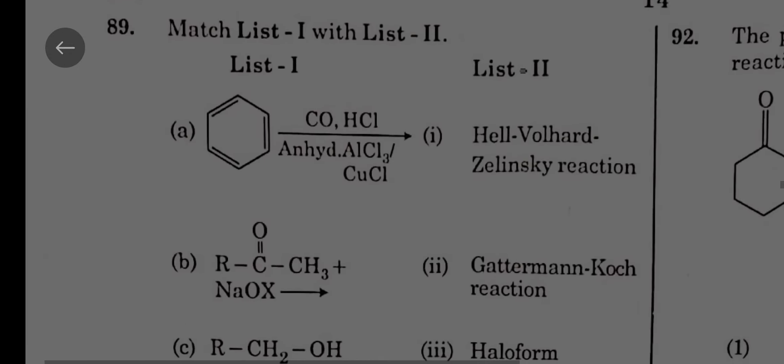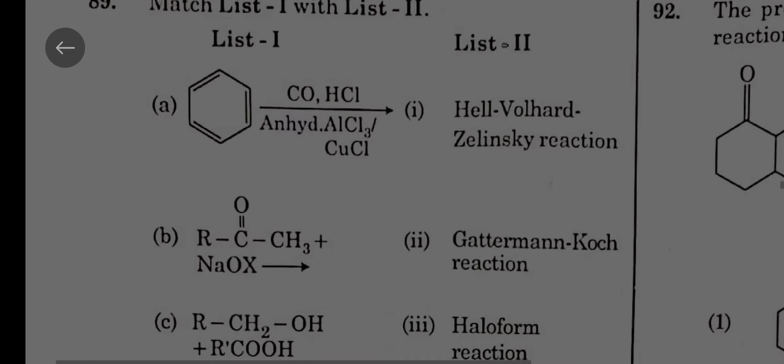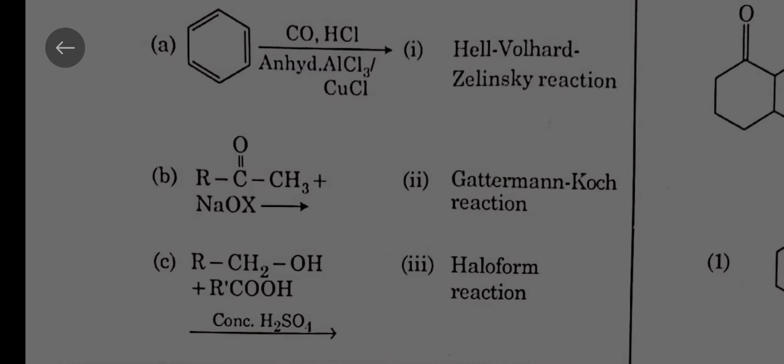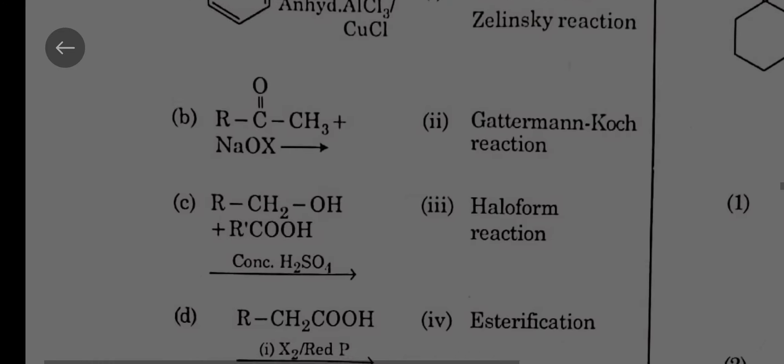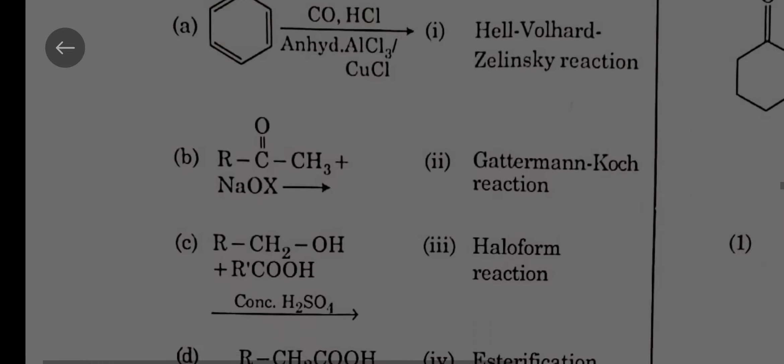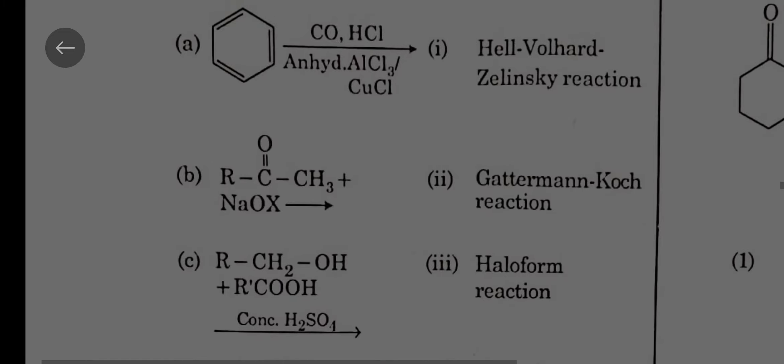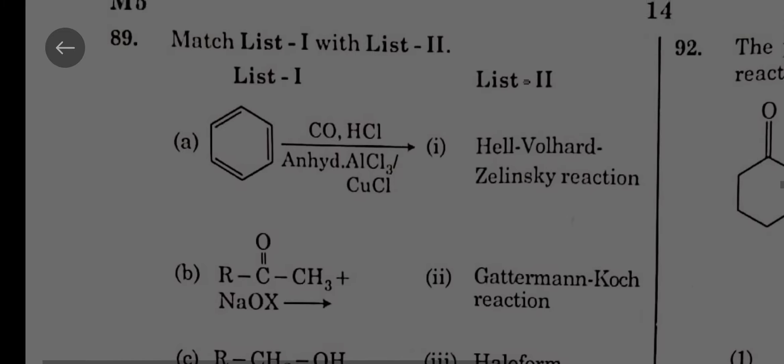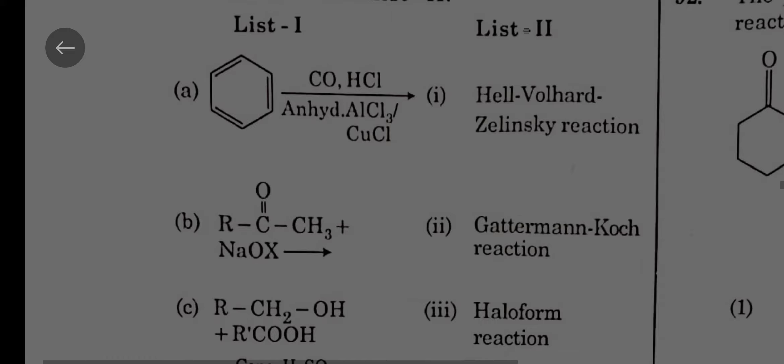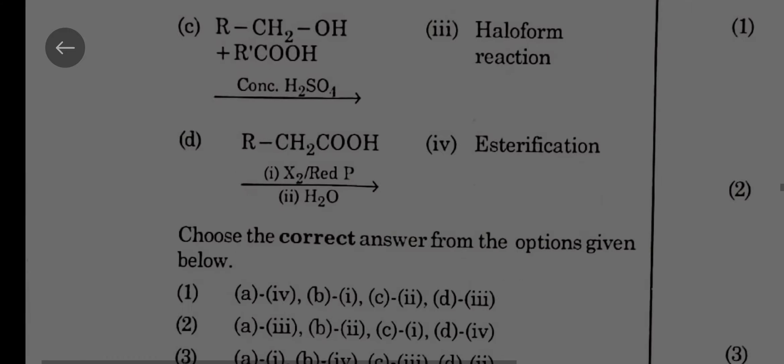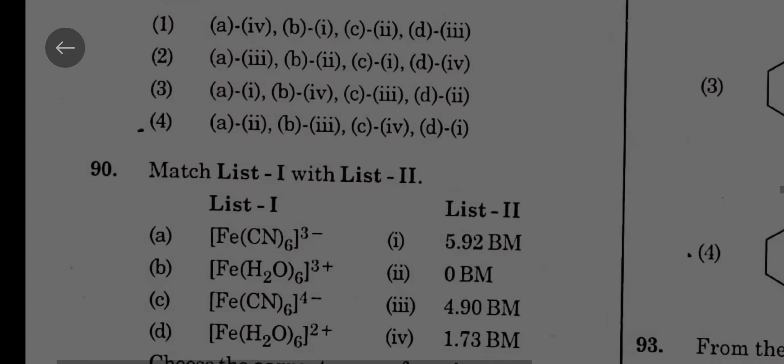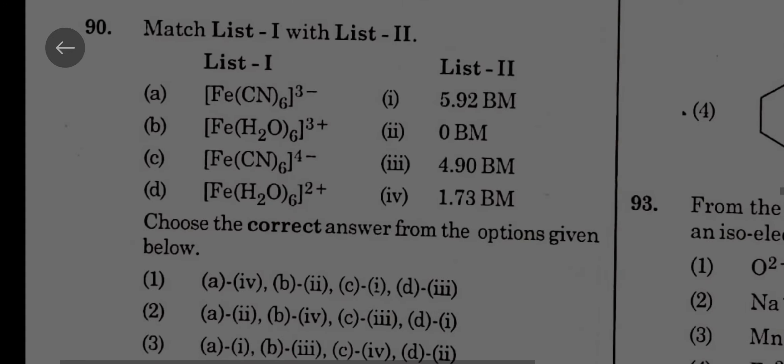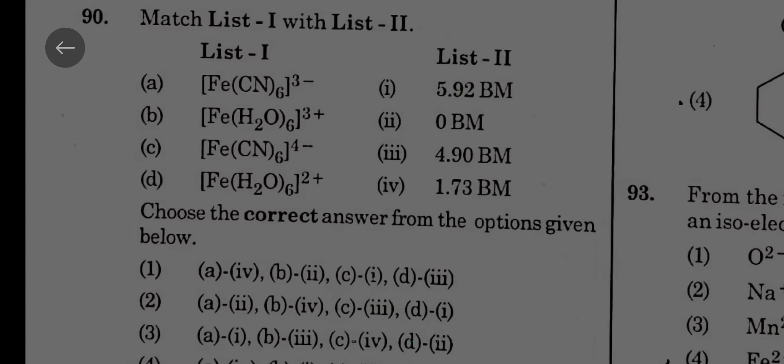Benzene with CO-HCl is Gattermann-Koch reaction, RCO-CH3-NaOH is haloform reaction, RCH2-COOH plus acid is esterification, RCS to COOH is Hell-Volhard-Zelinsky reaction. A should be 2, A-2 is only fourth option. So many matching questions are given this time.